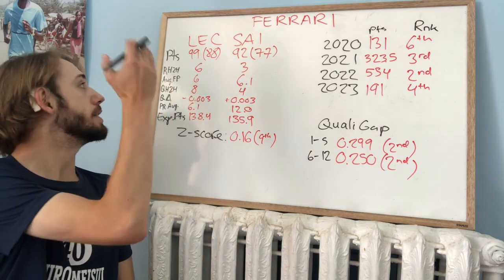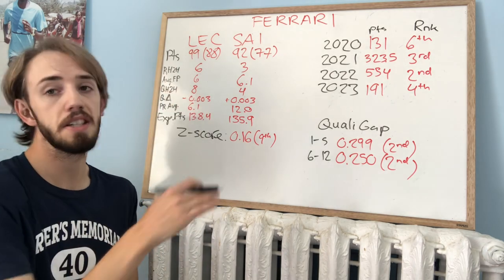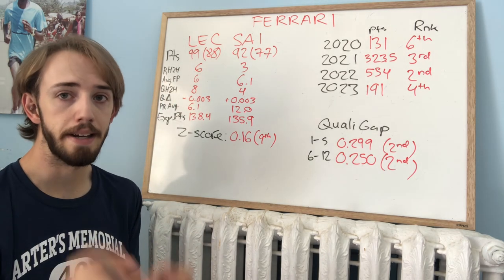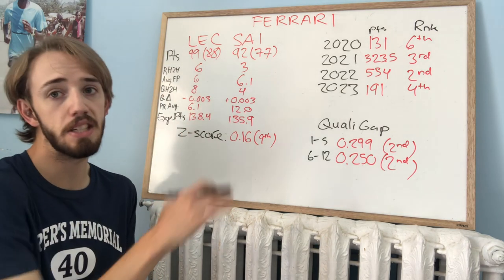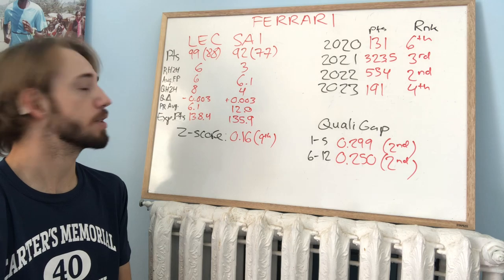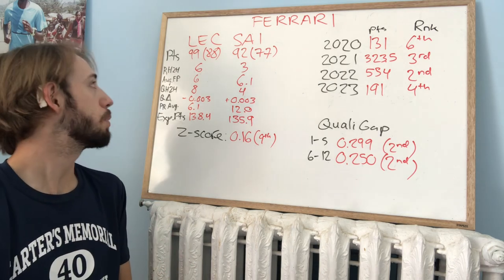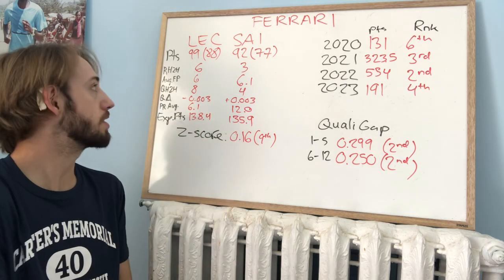In the points head-to-head, 99 points for Leclerc, 92 points for Sainz. And ignoring points from sprint races, it's 88 for Leclerc and 77 for Sainz. So Sainz has quite a few more points from the sprint races than Leclerc does.